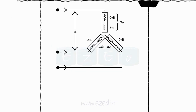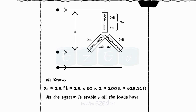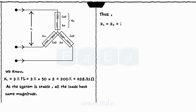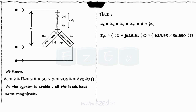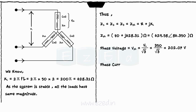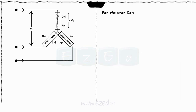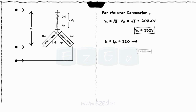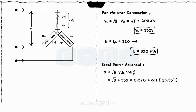For the star connection: XL = 2π·f·L = 628.31 ohms. As the system is balanced, all impedances are equal: Zph = R + jXL = 40 + j628.31 ohms. The phase voltage Vph = VL / √3 = 202.07 volts. The phase current Iph = Vph / Zph = 320 milliamperes. For the star connection, VL = √3·Vph = 350 volts and IL = Iph = 320 milliamperes. The total power absorbed P = √3·VL·IL·cosφ = 12.34 watts.